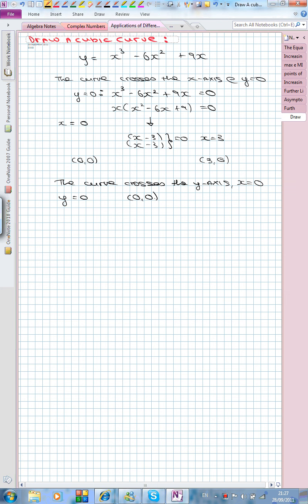Now we want to find the turning points of the curve. To do this, we let dy/dx equal to 0. So dy/dx of this given curve is 3x squared minus 12x plus 9. Let that equal to 0.